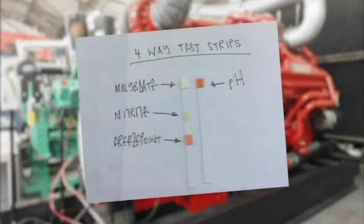This test checks four different conditions of the coolant using two different test strips. The first test uses a test strip with three pads. The first pad measures molybdate, the middle measures nitrite, and the final pad measures freeze point.